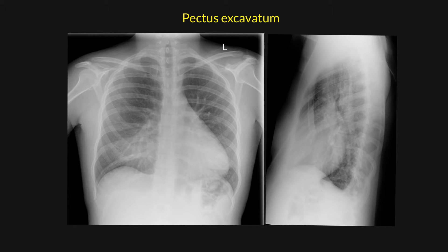This is a patient who has pectus excavatum, sometimes known as a funnel chest. The first thing to notice is that the right heart border is indistinct, and there is an increased density projected over it, and this is due to the pectus excavatum.